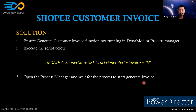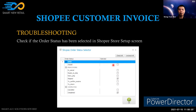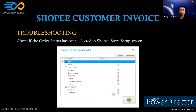The second issue: unable to generate customer invoice for Shopee orders of a specific order status. Users sometimes ask why their 'Open' status Shopee orders are not generating a customer invoice. In the Shopee store settings, at the bottom in the 'Generate Customer Invoice' section, you select which order statuses — such as 'Shipped' or 'Completed' — will trigger invoice generation.